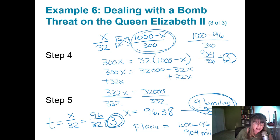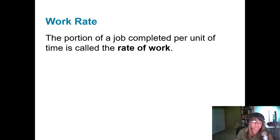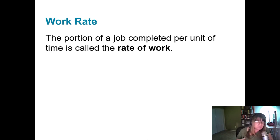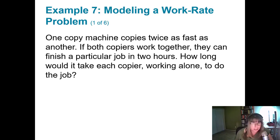Another type of problem is a work rate problem, which means the proportion of a job that can be completed per unit of time — that's your rate of work. If you can get the job halfway done in an hour, your rate of work is one-half, and it would take two hours to complete the job. Now, one copy machine copies twice as fast as another; if both copiers work together they can finish a particular job in two hours. How long would it take each copier working alone?